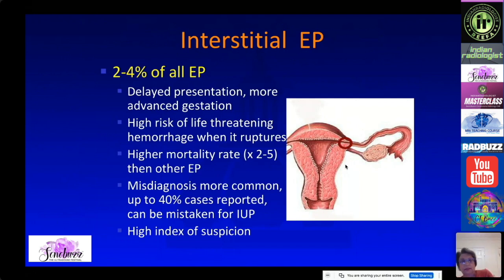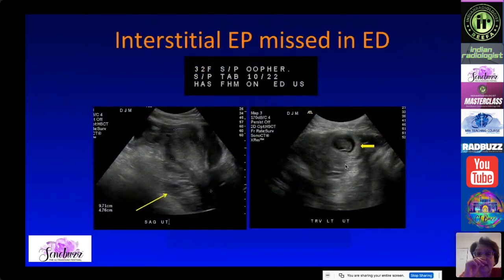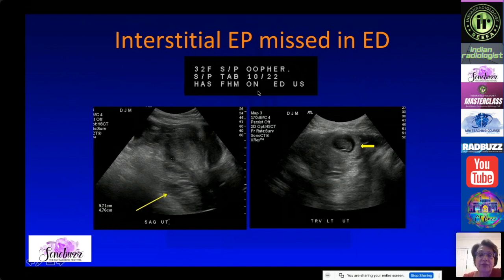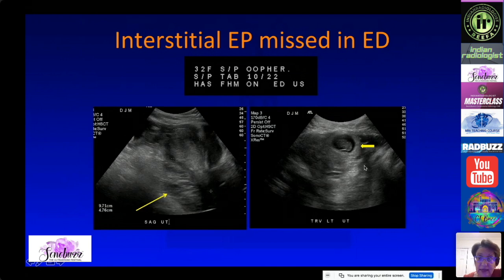They have higher morbidity and mortality compared with other ectopic pregnancies. Here is an example of an interstitial ectopic pregnancy that was missed on point-of-care ultrasound in the ED. The patient reportedly had an abortion elsewhere and had fetal heart motion on ED ultrasound, but wasn't doing well. On formal ultrasound, there is a large amount of clot in the cul-de-sac with a live fetus, but the pregnancy is very eccentric.